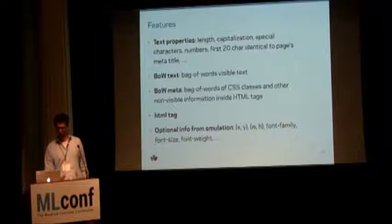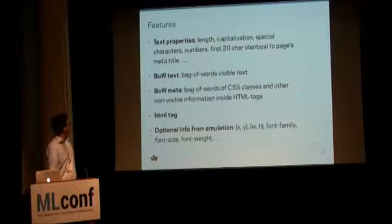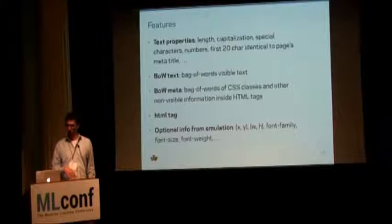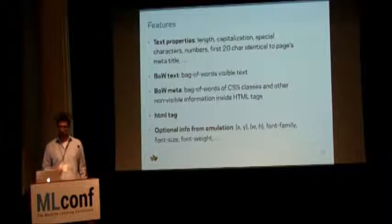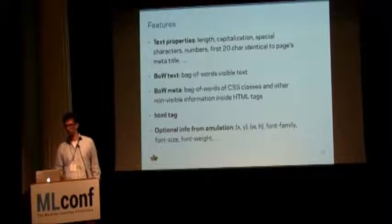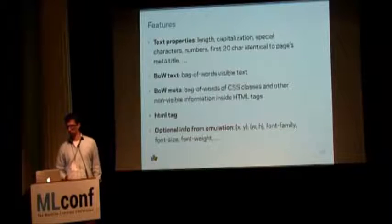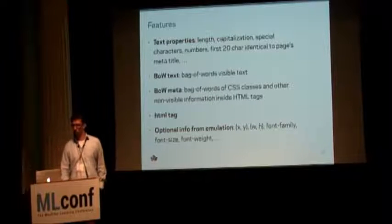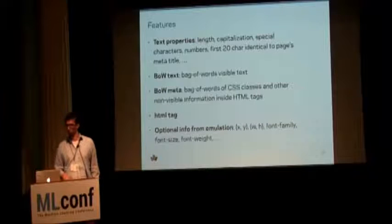Building up to the machine learning part, let's talk about the features available. This is a very hybrid data set. From a deep learning perspective you might have lots of features all of the same type, like pixel values. Here we have many different types: text properties that are topological in range, bags-of-words models for certain words, a vectorizer for HTML tags, and optionally a separate classifier working with visual information to increase accuracy.